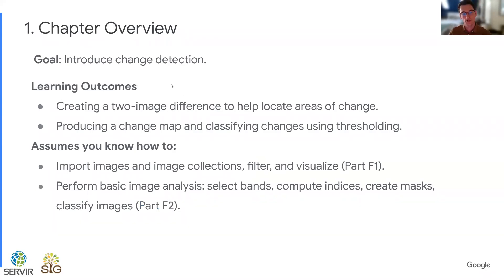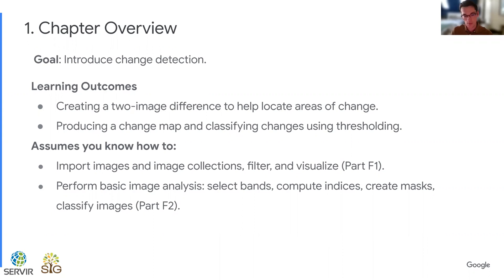For this chapter, the goal is to introduce change detection. We have two learning outcomes. The first is we are going to create a two-image difference to help identify areas of change, and from that we are going to produce a change map and classify using value thresholding of the difference image. This chapter assumes you know how to import images and image collections, filter image collections, and how to visualize images and image collections, which we go through in part F1 of the book. We also assume you know how to perform some basic image analysis, like selecting bands, computing spectral indices, creating image masks, and classifying images into thematic layers, which we go into in part F2.